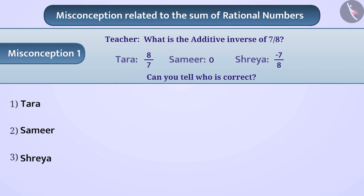Some children do not have the correct understanding of additive inverse. They understand that the inverse of a rational number is obtained by replacing the numerator and denominator with each other. As Tara stated, the additive inverse of 7 by 8 is 8 by 7. But this is a wrong understanding, so Tara's answer is wrong.